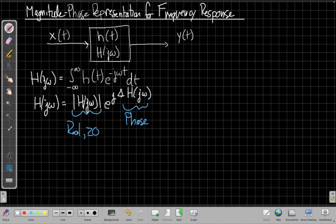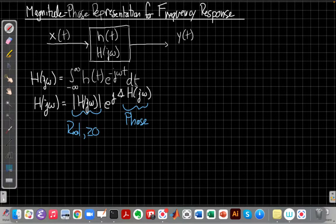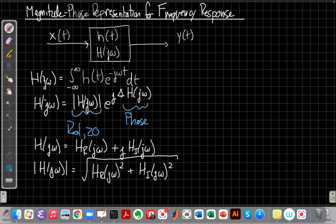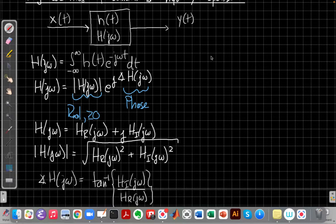So if I write h in terms of its real and imaginary part, like I've shown here, then the magnitude is the square root of the square of the real and imaginary. And the phase is the arc tangent of the ratio of the imaginary to the real.